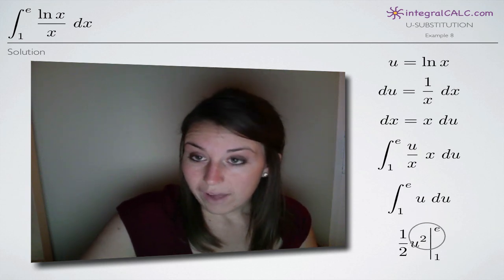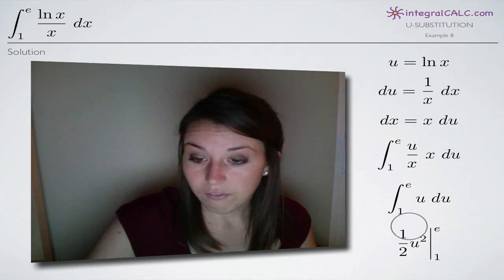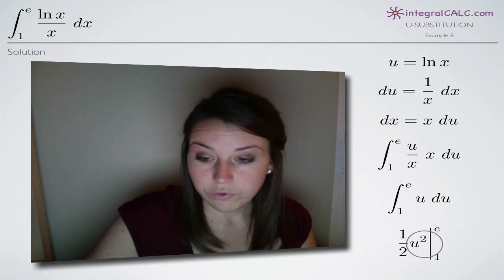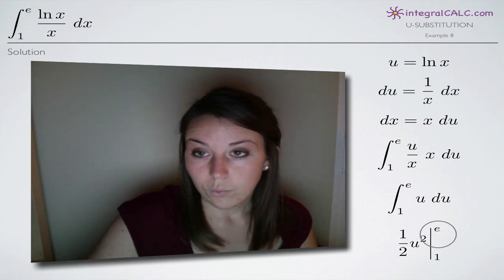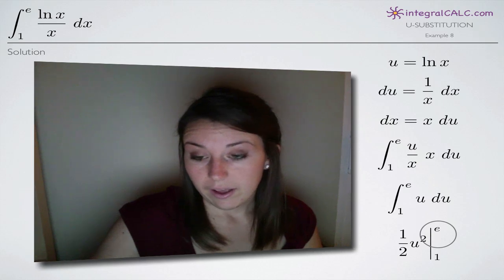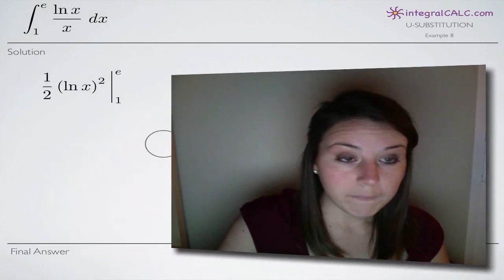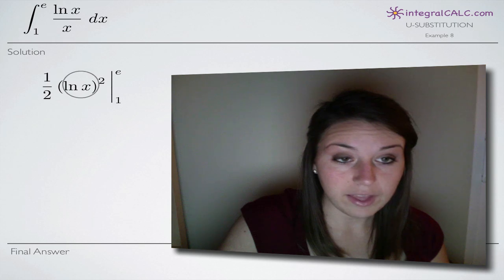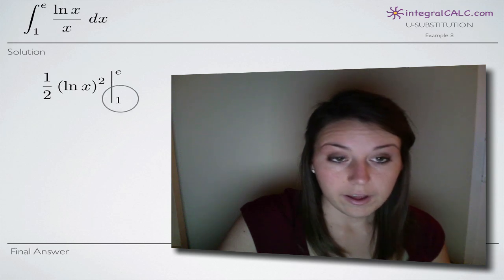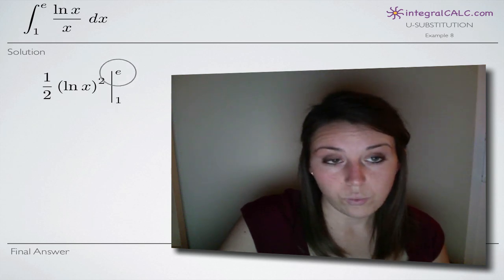Before we do that, we'll have to plug in natural log of x for u. Before we evaluate on these limits, we want to go ahead and plug back in to eliminate u from our equation. So when we do that, we'll get 1 half times ln of x squared and again evaluating on the range 1 to e.